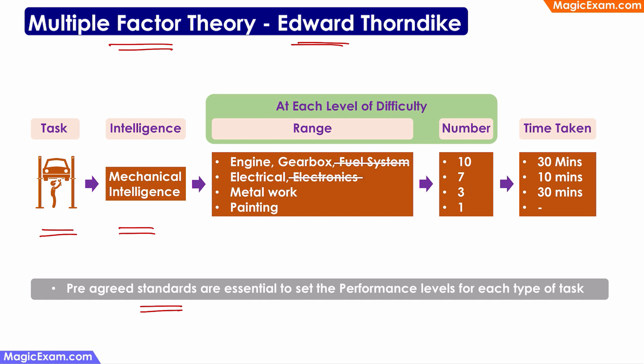For example, painting might be very easy, so I put it as level one. Metal work is more difficult, so I say level two. Electrical and electronics is level three, and engine work, gearbox work, or fuel system work might be at level four. So I have different levels of difficulty for different types of tasks.